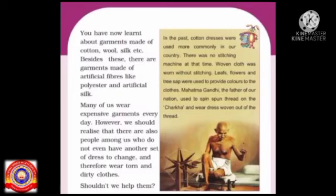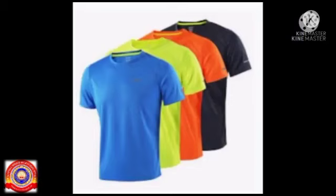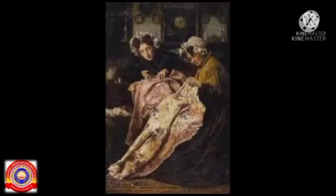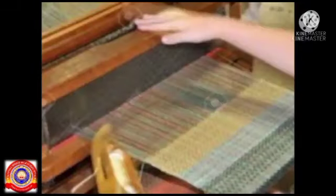So now we learned about the clothes made of cotton, wool, and silk. Besides these, there are clothes made up of artificial fibers like polyester and artificial silk. In olden days, cotton dresses were used more commonly in our country. There were no stitching machines at that time, so the woven clothes were worn without stitching.